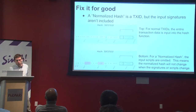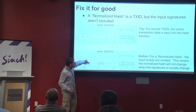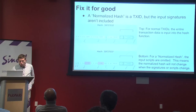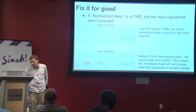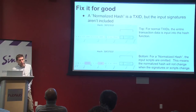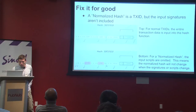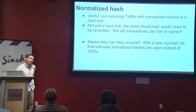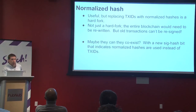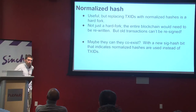One idea from about a year ago is to fix this with a normalized hash — basically a TX ID that doesn't reference the entire transaction; a TX ID that cuts out the script sections. For the normal TX ID you take the whole transaction including inputs and outputs. With a normalized hash, the input scripts are omitted — this is where all the change happens; where someone can push weird stuff onto the stack or re-sign with a new ECDSA signature. Omit those, and the normalized hash will not change when signatures or scripts change. Normalized hashes are useful, but replacing TX IDs with normalized hashes is a hard fork — in fact basically impossible because your entire blockchain would need to be rewritten.